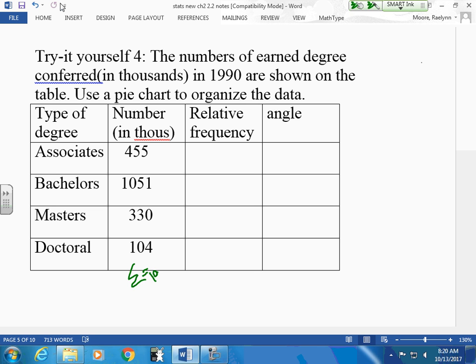1940. So we did 455 over 1940. This will give us 0.235. This will give us 0.542. This will give us 0.170, and this will give us 0.054. I got 0.234, 0.541, 0.170, and 0.053. Did they add up to 1 for you? I had to change the first one.